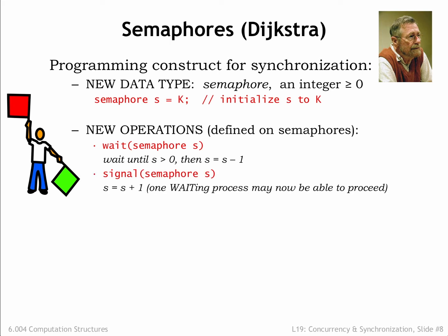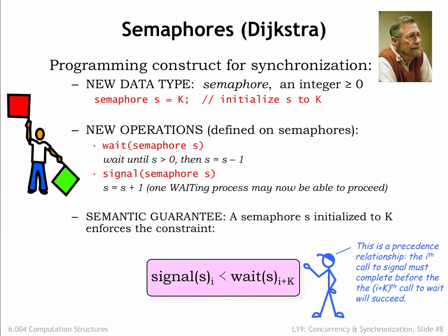The signal operation increments the value of the specified semaphore. If there are any processes waiting on that semaphore, exactly one of them may now proceed. We'll have to be careful with the implementation of signal and wait to ensure that the exactly-one constraint is satisfied — in other words, that two processes both waiting on the same semaphore won't both think they can decrement it and proceed after a signal. A semaphore initialized with the value k guarantees that the i-th call to signal will precede the (i+k)-th call to wait. In a moment we'll see some concrete examples that will make this clear.